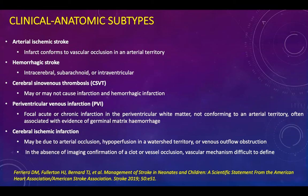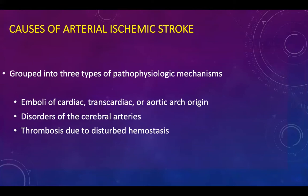Other subtypes include hemorrhagic stroke, cerebral sinovenous thrombosis, also known as CSVT, which may or may not cause infarction and hemorrhagic infarction. Periventricular venous infarction includes focal acute or chronic infarction in the periventricular white matter, not conforming to an arterial territory, and it is often associated with germinal matrix hemorrhage and cerebral ischemic infarction.